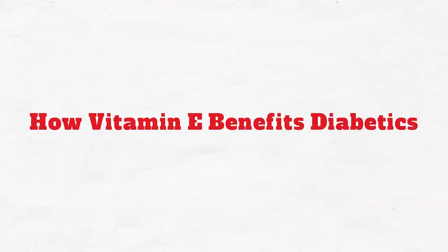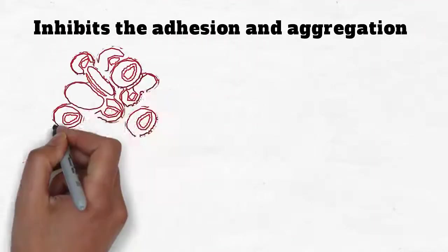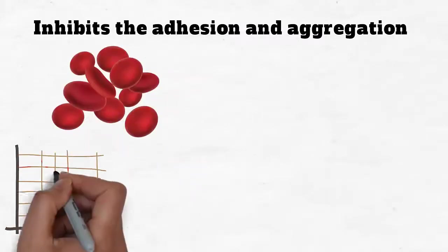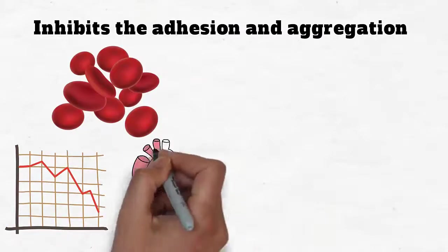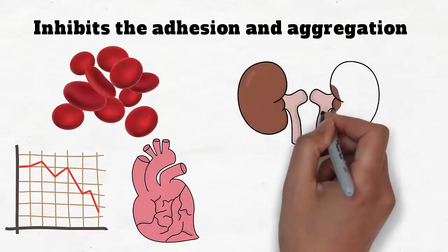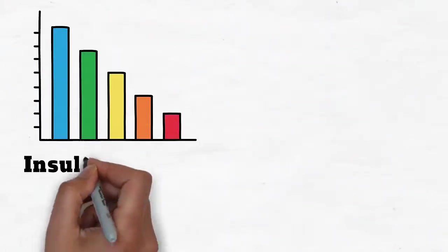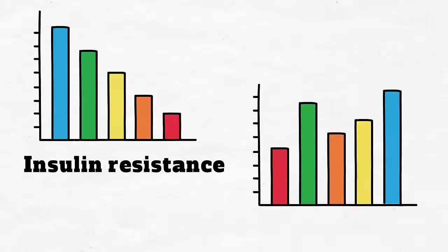How vitamin E benefits diabetics: Inhibits the adhesion and aggregation of platelets and therefore reduces the risk of cardiovascular complications of diabetes. May help other complications of diabetes such as kidney problems and nerve damage. Reduces insulin resistance and improves glycemic control.